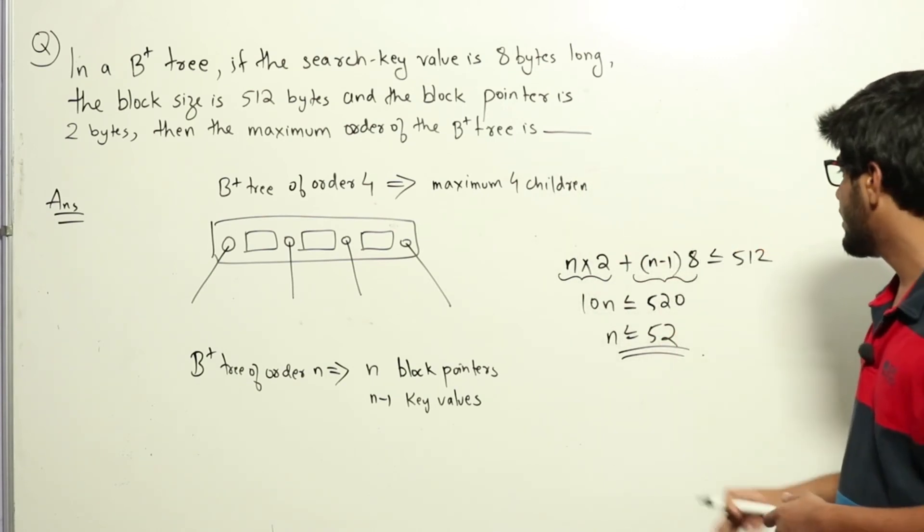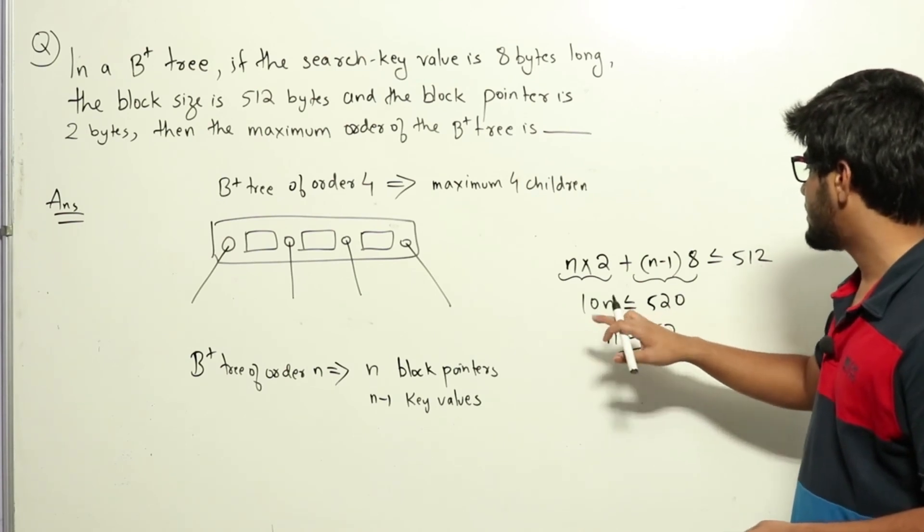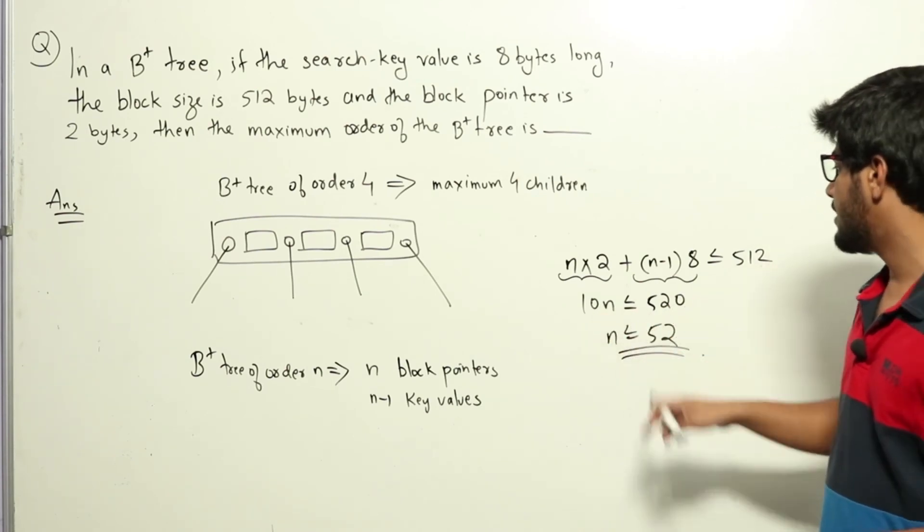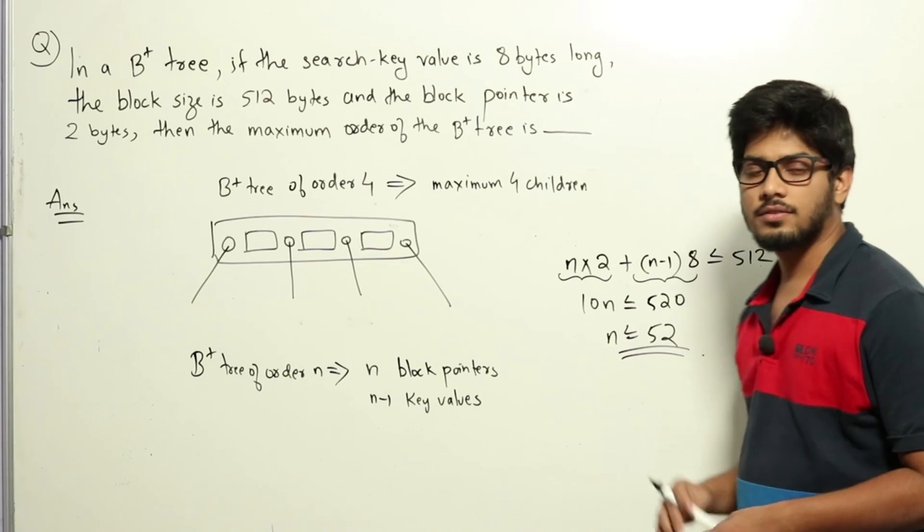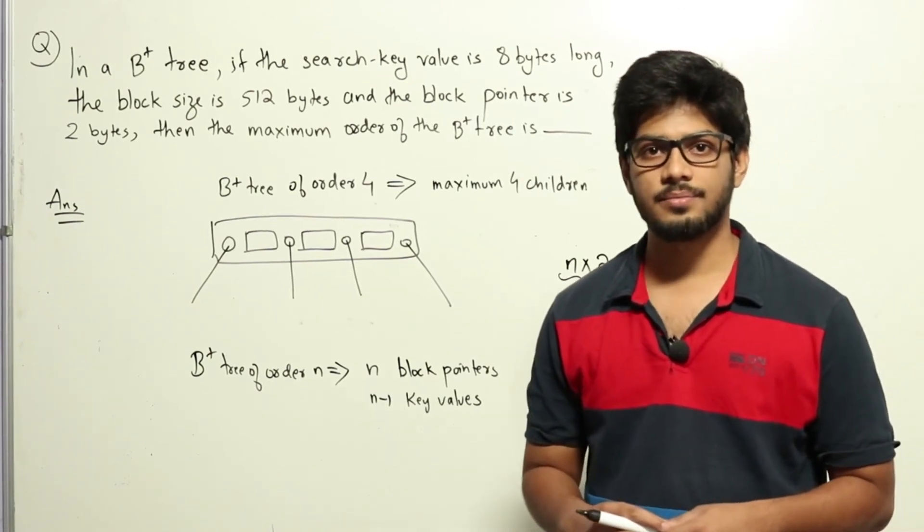On solving this, we get 10n ≤ 520, or n ≤ 52. So the maximum order of such a tree is 52. That is the answer: 52.